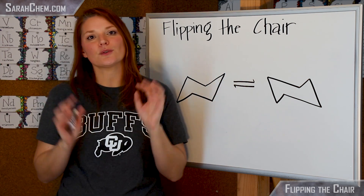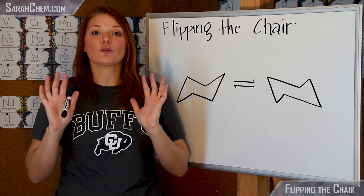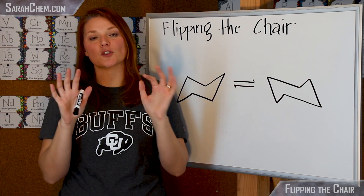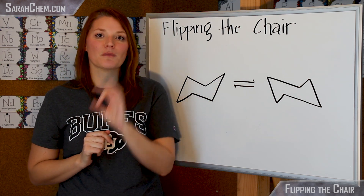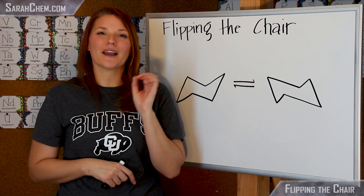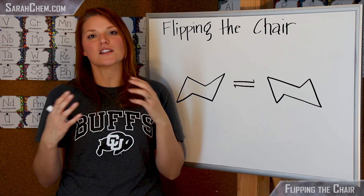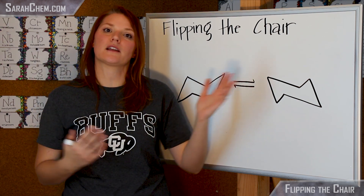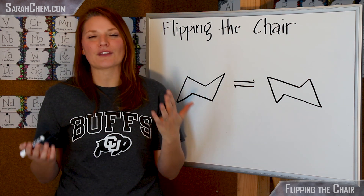These are two distinct conformers and there is an equilibrium where they flip between each other. But sometimes that equilibrium heavily favors one version over the other. By understanding how and what changes, it'll help us understand why there might be more stability in one chair than the other, even when they pretty much look the same.